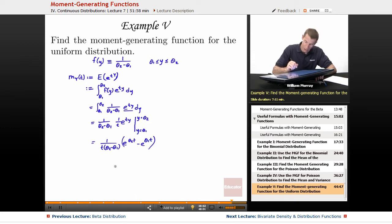I need some parentheses here. And I could write that over a common denominator, e to the theta 2t minus e to the theta 1t, and we divide that by t times the quantity theta 2 minus theta 1. That's my moment generating function for the uniform distribution.